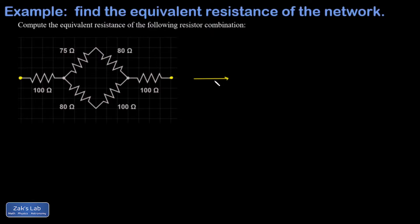What I see in the initial picture is that there's two right here that are clearly in series: the 75 and 80 right here. The same current must flow through both of those, so they're in series. And the same is true for the 80 and the 100 on the bottom.